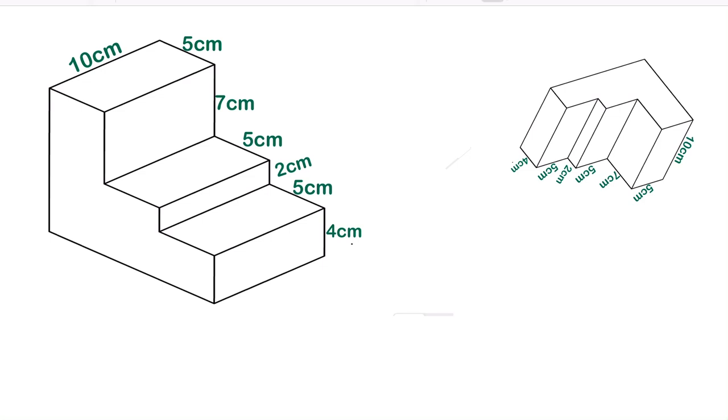So before we start calculating the volume, let's write the formula of volume of a staircase prism or for any other prism. So the volume is equal to the base area times the height. So this is the formula that we use.